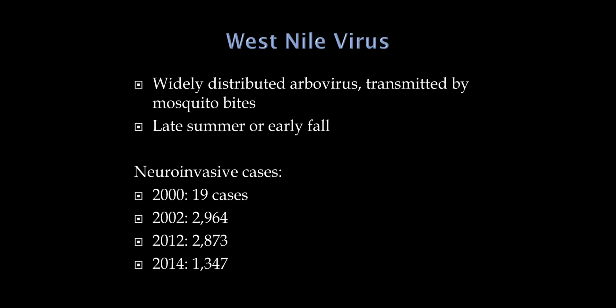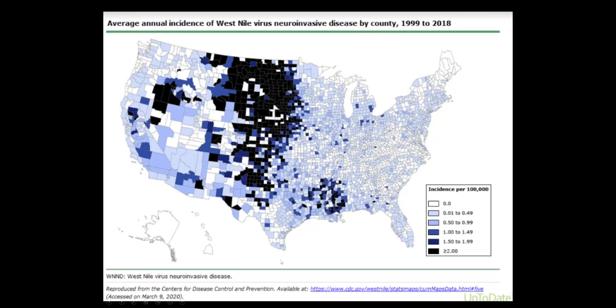The modern-day polio is West Nile virus, transmitted by mosquito bites. We see these cases mainly in late summer or early fall. This is quite uncommon - nervous system involvement was rare, with only 19 reported cases in 2000, and we've been around 2,000 cases per year in the United States since then. Incidence is highest in areas like North and South Dakota, which, having done a camping trip there in September, I can testify have a lot of mosquitoes.